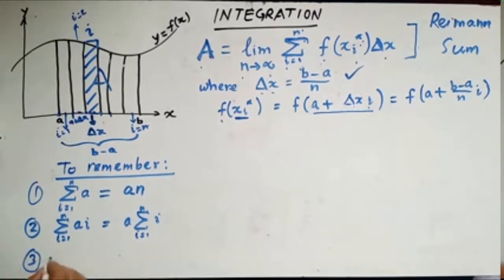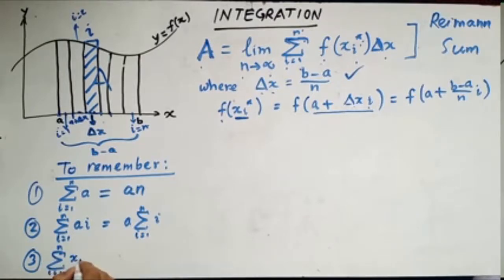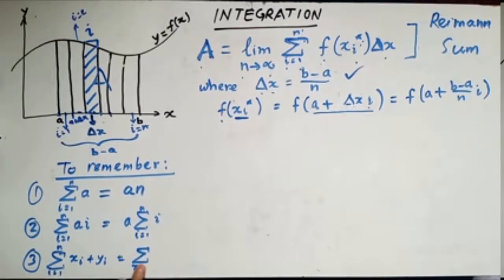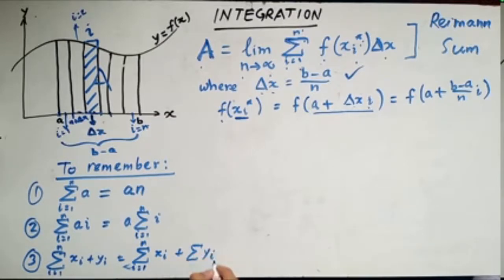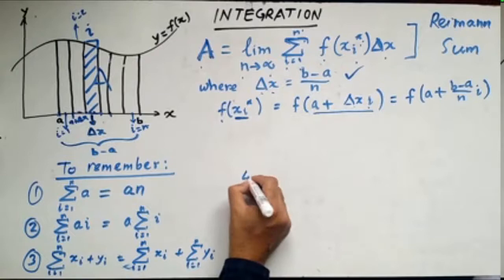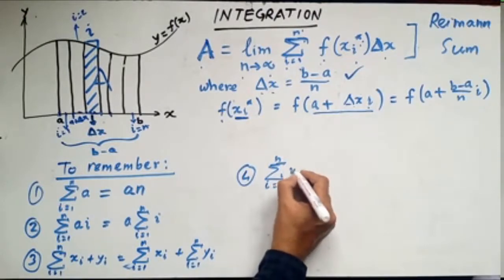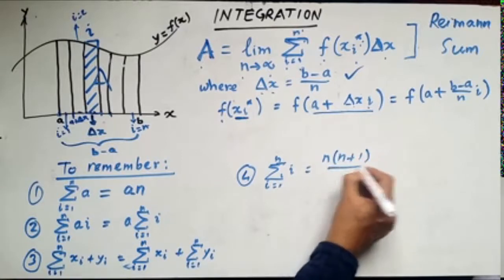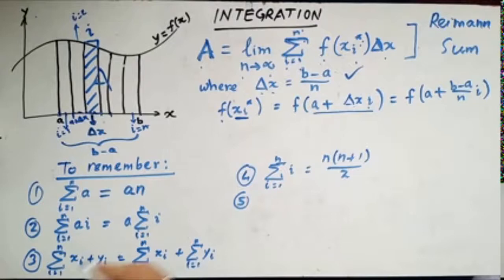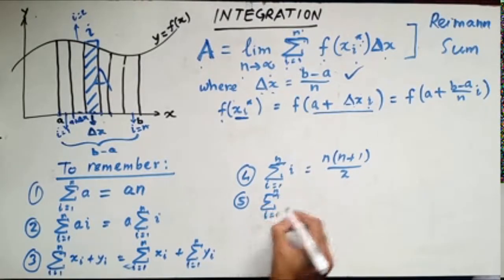Rule 3: the summation from i equals 1 to n of (x_i plus y_i) can be broken into two parts — the summation from i equals 1 to n of x_i, plus the summation from i equals 1 to n of y_i. Rule 4: the summation from i equals 1 to n of i equals n times (n plus 1) divided by 2.